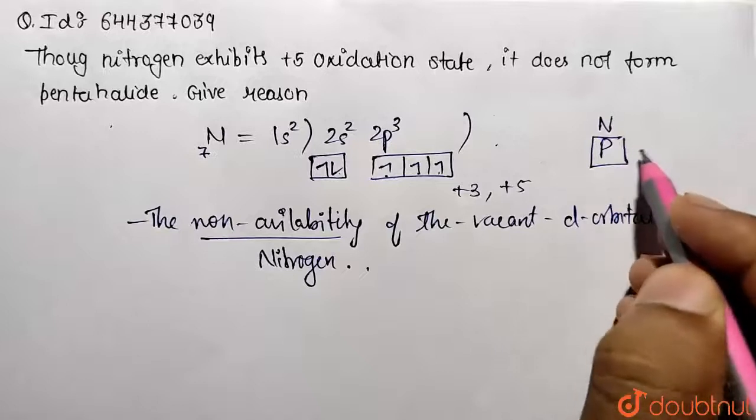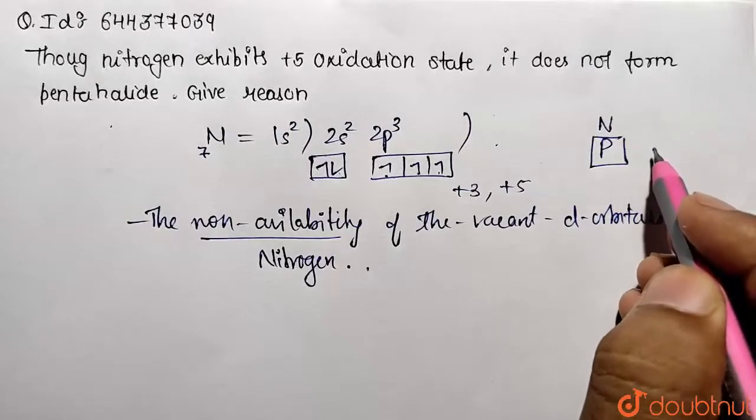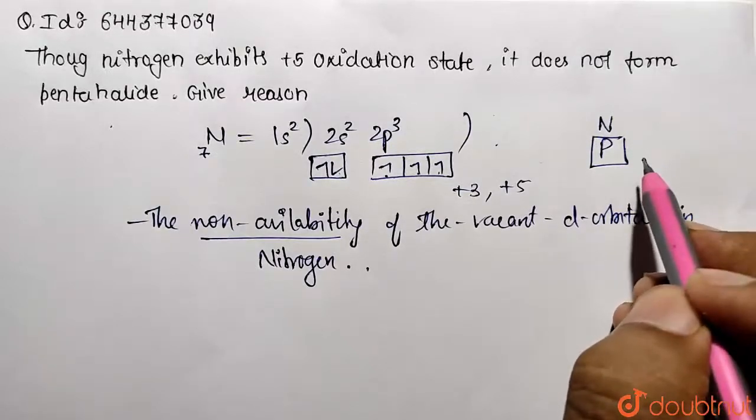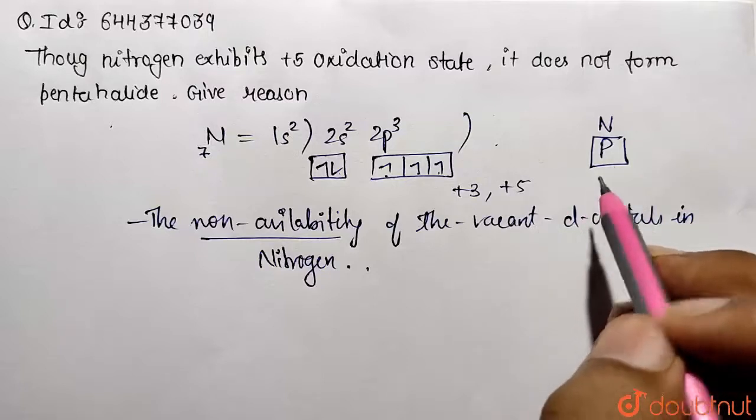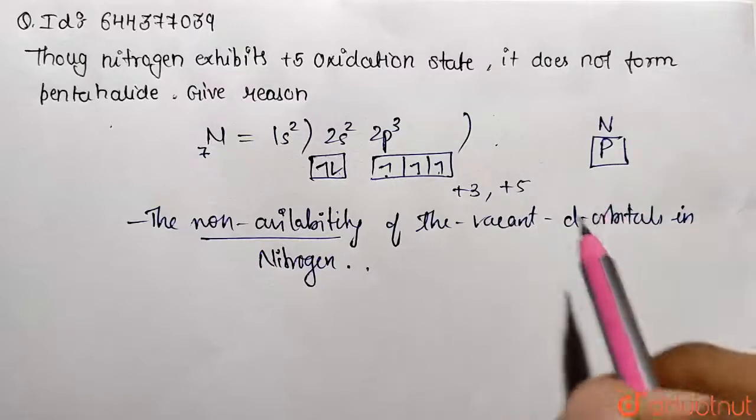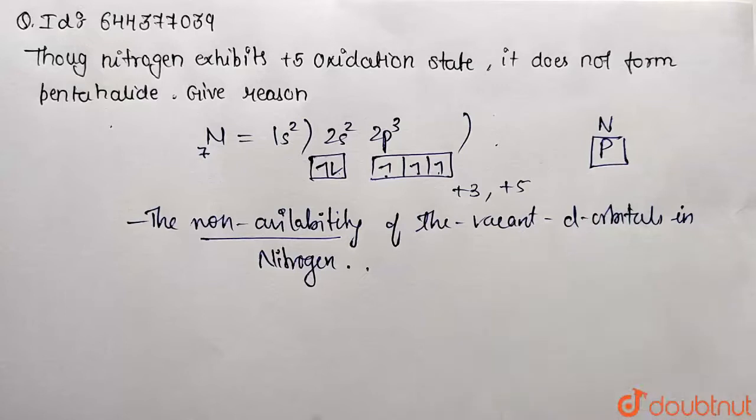the 3d orbital is available for making bonds. That's why phosphorus can show pentahalide formation but not nitrogen. This was the basic answer. Thank you.